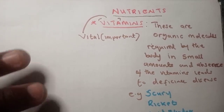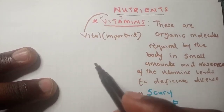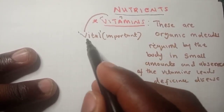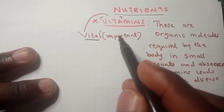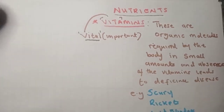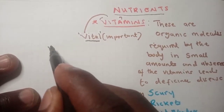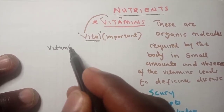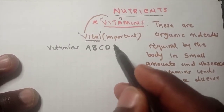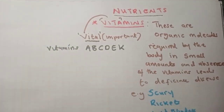So vitamins — whichever way you want to pronounce it — these are nutrients. The name itself, 'vita', comes from the word 'vital' in English, which simply means something that is very important to the body. We have vitamins denoted by letters A, B, C, D, E, and K.